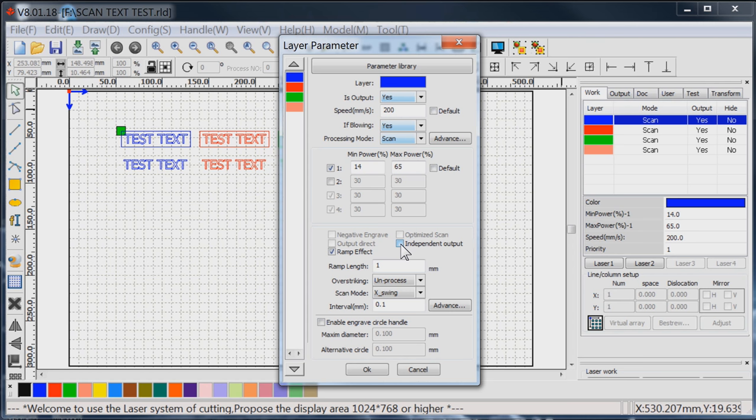Ramp effect is something I've never played with. I've seen the pictures in the manual but never really tried to work out what ramp effect is. Today we're going to set this blue layer up at quite a high speed, 200 millimeters a second, and we're going to set it with a minimum speed and a maximum speed. These min and max speeds are the min and max for my machine. I'm going to select the ramp effect and set a ramp length of one.